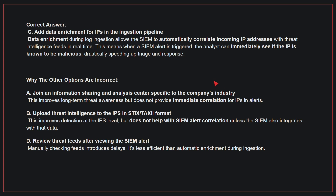Why the other options are incorrect: A — join an information sharing and analysis centre specific to the company's industry. This improves long-term threat awareness but does not provide immediate correlation for IPs in alerts. B — upload threat intelligence to the IPS in STIX/TAXII format. This improves detection at the IPS level but does not help with SIEM alert correlation unless the SIEM also integrates with that data. D — review threat feeds after viewing the SIEM alert. Manually checking feeds introduces delays and is less efficient than automatic enrichment during ingestion. Therefore, the correct answer is C.